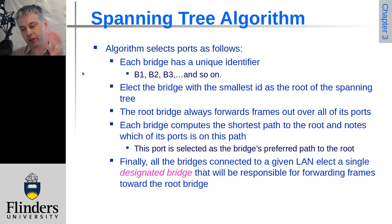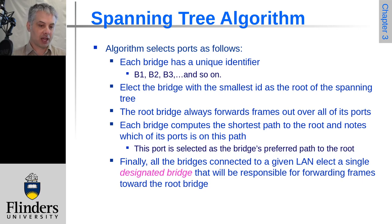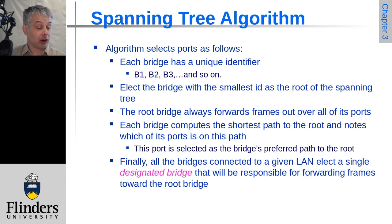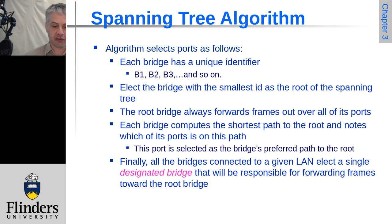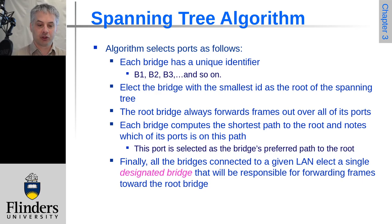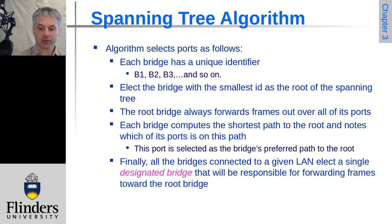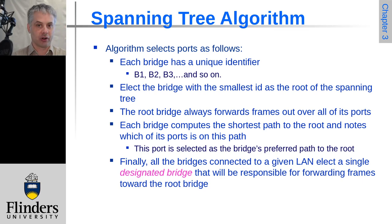Each bridge has a unique identifier. The bridge with the smallest ID will be the root of the spanning tree. One way to elect the lowest ID is to use the Ethernet address, which is globally unique, giving a deterministic root node. The root bridge always forwards frames out over all its paths since it's the root and doesn't need to worry about loops. Each bridge then computes the shortest route to the root and notes which of its ports is on that path — that port becomes the bridge's preferred path to the root node.